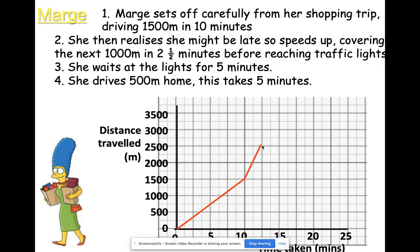Part three: she waits at the lights for five minutes. We're at 12.5 minutes — another five minutes takes us to 17.5 minutes. She's waiting at the lights, so she's not going anywhere, and we expect to see the graph go horizontal.